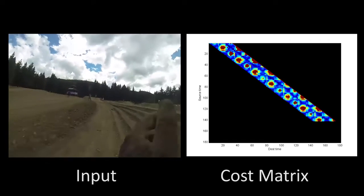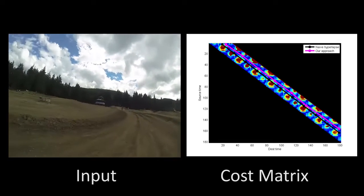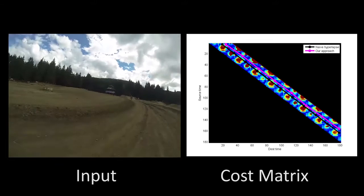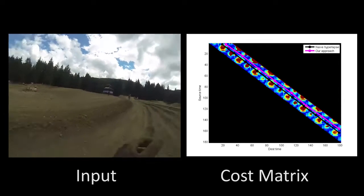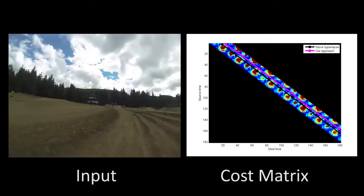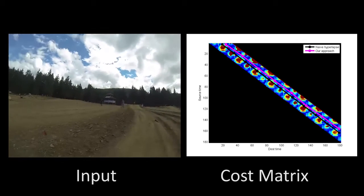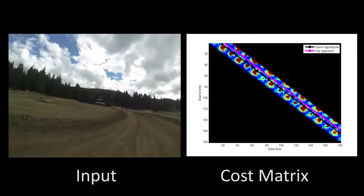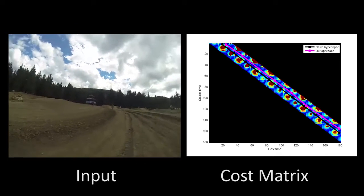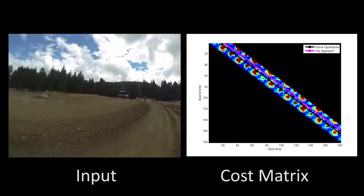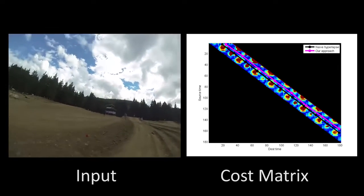A naive time lapse would consist of simply selecting every nth frame. Here we choose every 16th frame for a 16x speedup, shown as the black line. We developed a dynamic programming algorithm to select the frames that approximate a 16x speedup, but minimize a total cost equaling the sum of the transition cost plus a cost for violating the target 16x speedup.